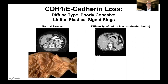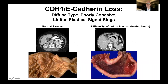Anatomically, a normal stomach has a very normal, thin wall thickness. In contrast, this is a stomach that has been removed and is very thick throughout its entirety — an example of linitis plastica from diffuse-type gastric cancer.